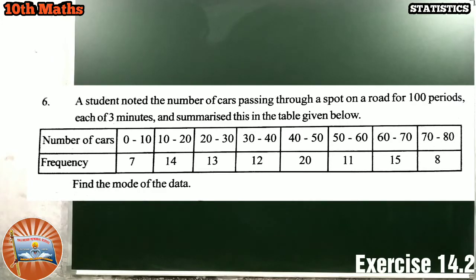Here one student has noted the number of cars passing through a particular spot of 100 periods. Each period is 3 minutes. We have to find the mode of the given data here.